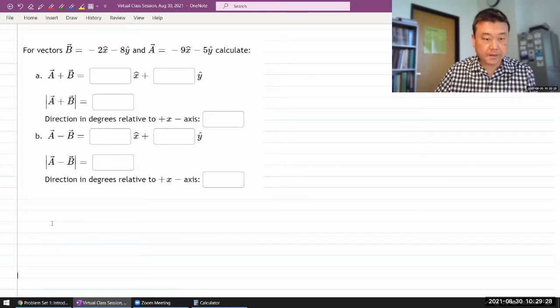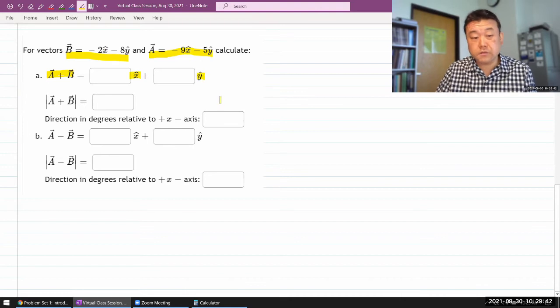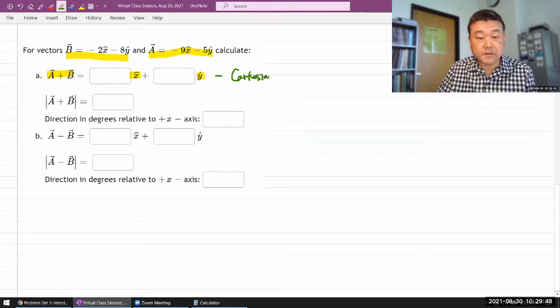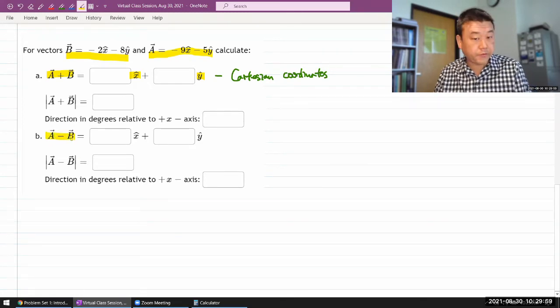So it's telling me these are the vectors B and A and it's having me calculate the sum of these two vectors and represent them in the unit vector notation, and you can actually think of this as the Cartesian coordinates. They end up being the same and then for part B it's having me calculate the difference of the two.